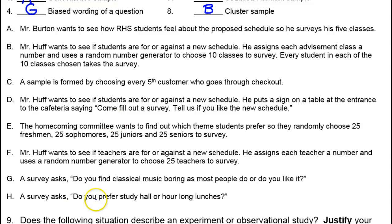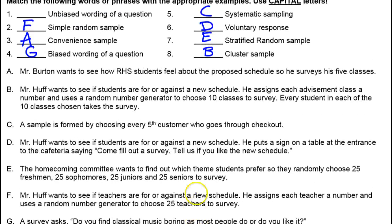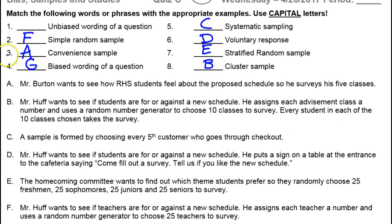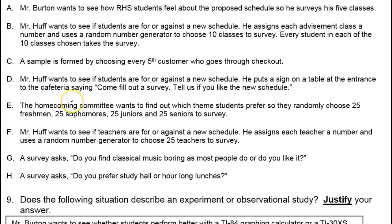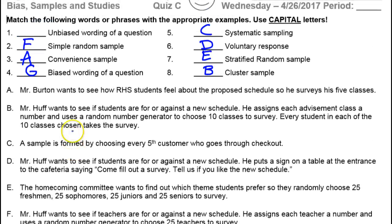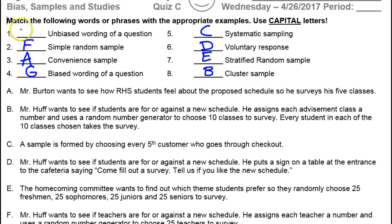And then: do you prefer a study hall or hour-long lunches? That would be an unbiased way of asking a question. So H goes here. Any questions on those sampling methods?